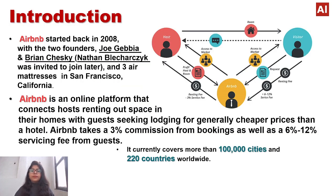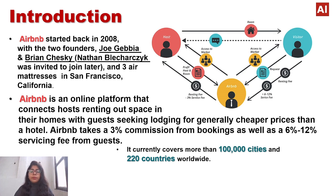Coming to the introduction, Airbnb was started back in 2008 with two founders, Joey Gabia and Brian Chesky. Nathan Bleichargic was invited later to join, and the three air mattresses started in San Francisco, California. Airbnb is an online platform that connects hosts renting out space in their homes with guests seeking lodgings at generally cheaper prices than hotels. Airbnb is cheaper because it doesn't have the overhead costs that hotels do. Airbnb takes 3% commission from bookings and 6–12% service fee from guests, and covers 1 lakh cities and 220 countries worldwide.